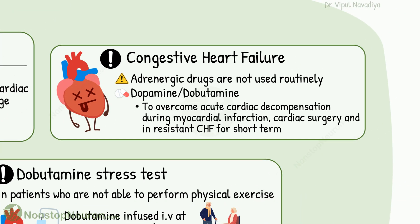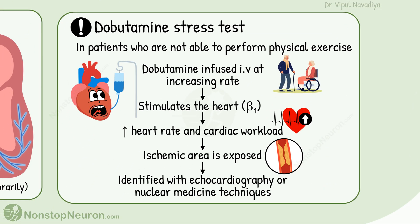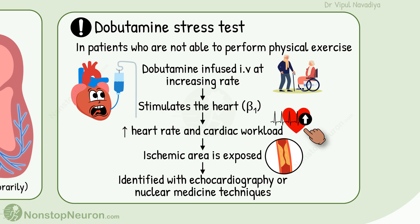Next, congestive heart failure. Adrenergic drugs are not used routinely for this indication. However, dopamine or dobutamine may be used to overcome acute cardiac decompensation during myocardial infarction, cardiac surgery, and in resistant CHF for a short term. The last cardiac use is the dobutamine stress test, done in patients who are not able to perform physical exercise to find out the ischemic area in the heart. Dobutamine is infused intravenously at an increasing rate, stimulating the heart by its beta-1 action, increasing heart rate and cardiac workload. The ischemic area is exposed and identified with electrocardiography or nuclear medicine techniques.